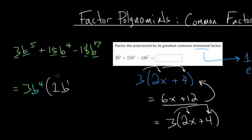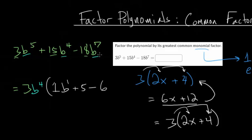For the second term, 15 divided by 3 is 5, and b⁴ divided by b⁴ leaves none — so we just have plus 5. For the third term, -18 divided by 3 is -6, and we're taking out 4 of the 7 b's, leaving 3. So b⁷ divided by b⁴ is b³, giving us minus 6b³. Our factored expression is 3b⁴(b + 5 - 6b³).